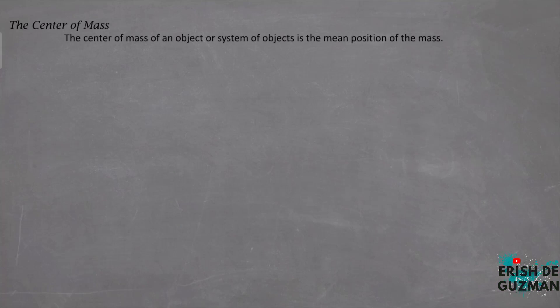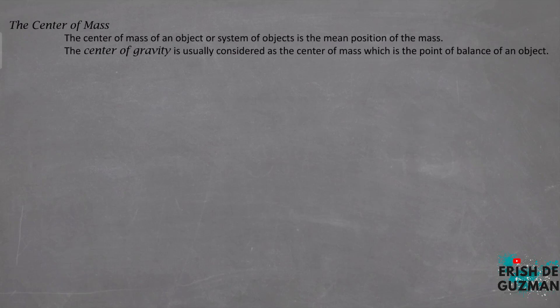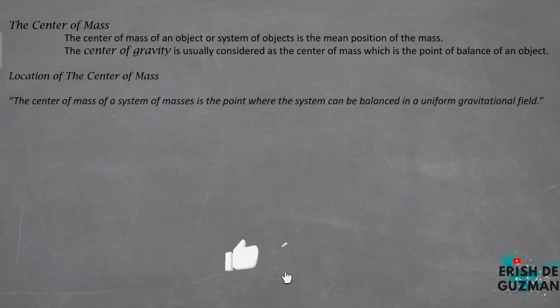In this lecture video, we introduce the concept of the center of mass. The center of mass of an object or system of objects is the mean position of the mass. The center of gravity is usually considered as the center of mass, which is the point of balance of an object. So we begin by defining the location of the center of mass. The center of mass of a system of masses is the point where the system can be balanced in a uniform gravitational field.